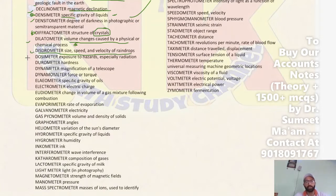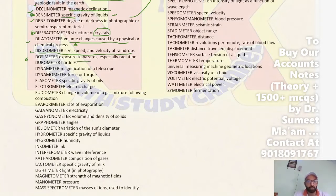Next, Dosimeter is used to measure exposure to hazardous radiation. Next, Durometer is used to measure hardness. Next, Dynamometer — one meaning is magnification of a telescope, and the most important meaning is that Dynamometer measures force and torque.